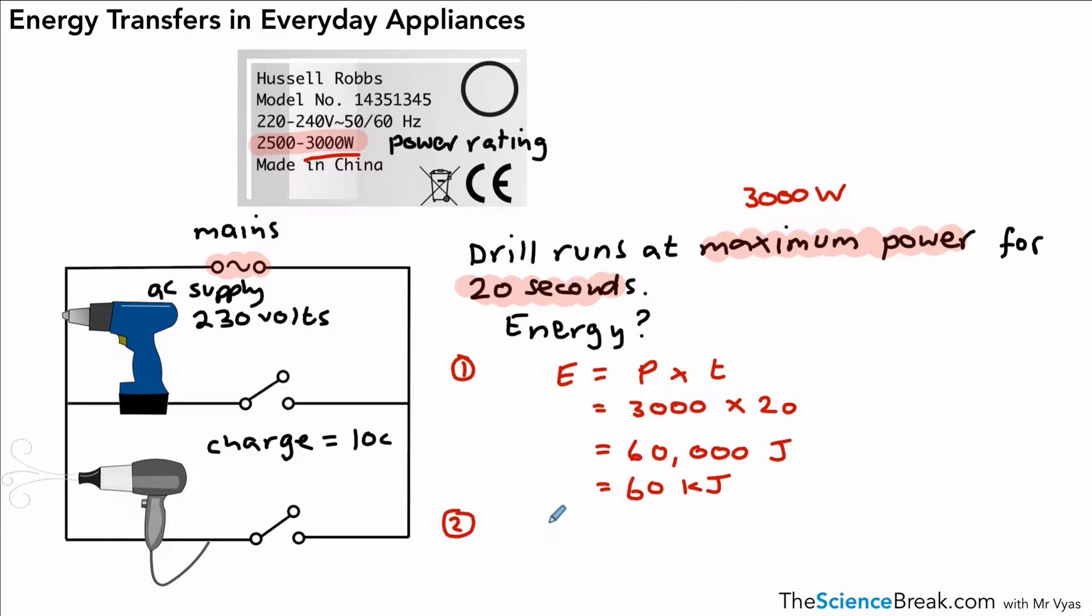You won't get these in the exam, or you might not get these in the exam. Energy is charge times potential difference. The charge is 10, as given in the question. The potential difference, well, we're running off the mains, and we know that the mains is about 230 volts. So we can do 10 times 230, that gives 2,300 joules of energy. Okay, and if you wanted, you could convert that to kilojoules, it would be 2.3 kilojoules. Okay, so there's our energy transferred by those two different appliances running off the mains.